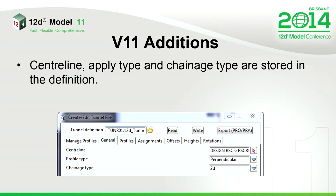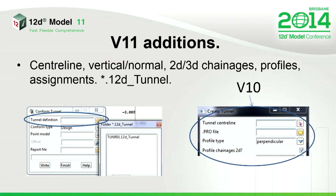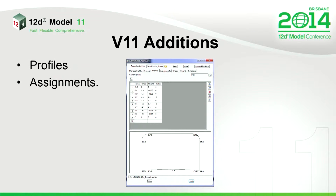The big difference for V11 is the centre line definition - you define the centre line, whether the profile is applied normal or perpendicular to the centre line, and whether you're using 2D or 3D changes. This is all wrapped up in a tunnel definition now. Previously in V10 the user had to pick the tunnel, pick the profile file, pick whether it was normal or vertical - it was obviously very error prone. So this stuff has been wrapped up into one tunnel definition.